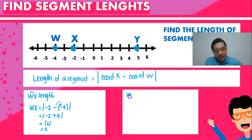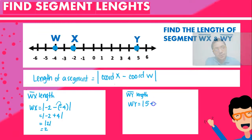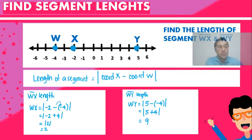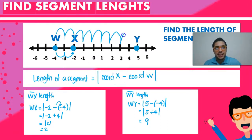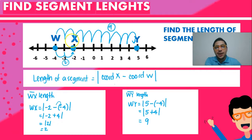Let's try calculating the length of segment WY — we do the same thing. We take the coordinate of Y, which is 5, and subtract the coordinate of W, which is minus 4. That's the absolute value of 5 plus 4, which equals 9. You can actually verify this by just counting the steps — here you count 2 steps for WX, meaning a length of 2 units, and then 1, 2, 3, 4, 5, 6, 7, 8, 9 units for WY.